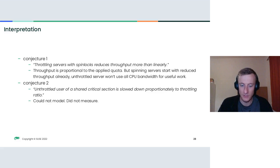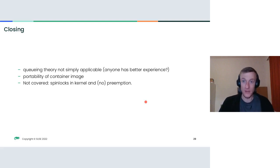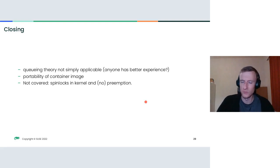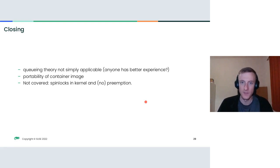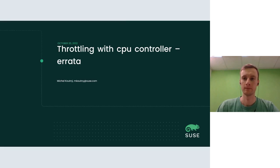Quick conclusions: queuing theory provides nice simplified models, but they get complex quickly for real-world scenarios — reach out if you have more experience. I liked being able to move the container between machines during debugging. An open question is how kernel spin locks — which cannot be preempted while spinning — would behave in this context; the expectation is similar but it's not verified.